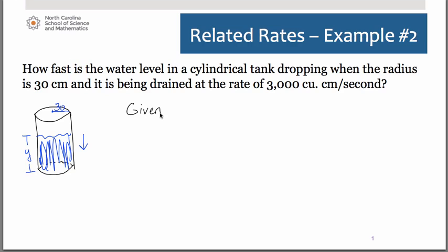Remember that one rate we're given, the 3,000 cubic centimeters per second, is a volume measurement. Let's call that dV/dt, and because that's the rate at which the water is being drained out, we're going to consider that as a negative quantity.